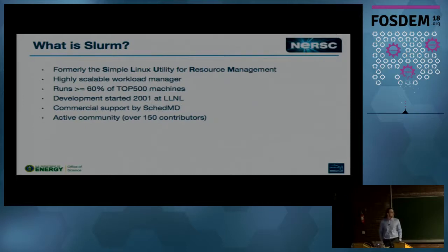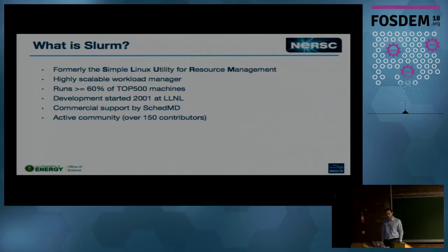So what is Slurm? Slurm was formerly called the Simple Linux Utility for Resource Management. When they reached half a million lines of code, they got rid of the 'simple', so it's only called Slurm now. It's a highly scalable workload manager — it runs on around 10,000 nodes on Cori, and on bigger systems as well. More than 60% of the 500 fastest machines in the world run Slurm. Development started in 2001 at Lawrence Livermore National Lab, and it's now maintained by a company called SchedMD and a pretty active open source community.